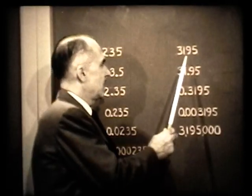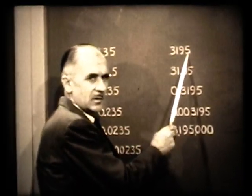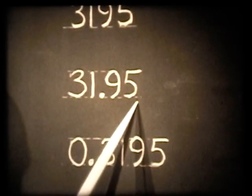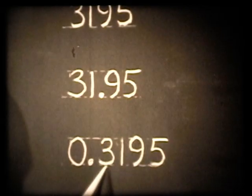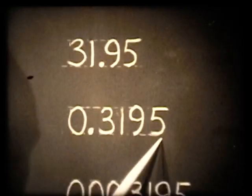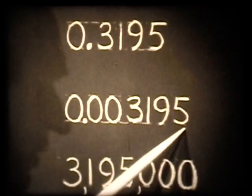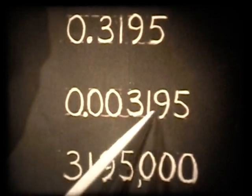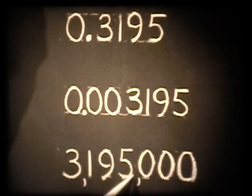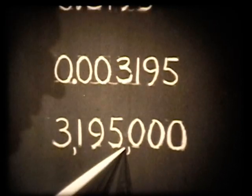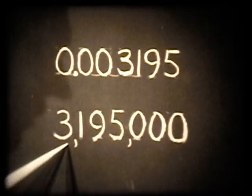Here again is a set of four significant figures: 3,195, or if you move the decimal point you get 319.5 — this is four significant figures. Or here, .3195, or .003195 — four significant figures. These are the only significant ones. Or 3,195,000 — only four significant figures.